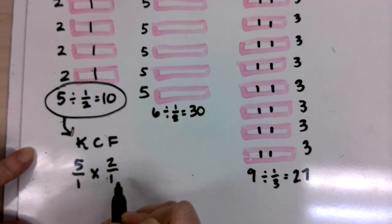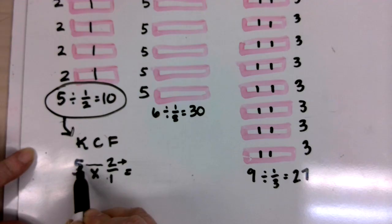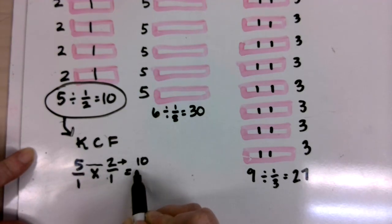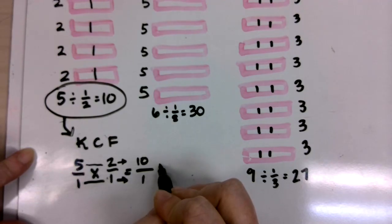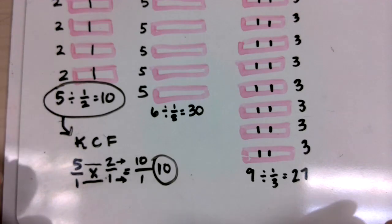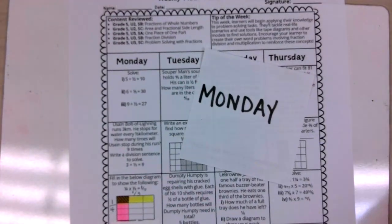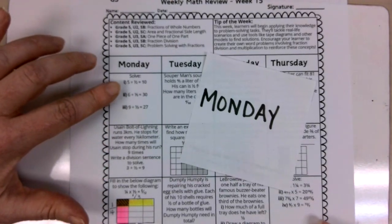Instead of a one over two, it becomes a two over a one. Now, boys and girls, we have a multiplication problem. And we know when we multiply fractions that we can multiply our numerators. Five times two equals ten. Multiply our denominators. One times one equals one. So yes, again, that shows me that when I break five into portions of one half, we can use this strategy with those three problems as well. Boys and girls, that is the concept behind number one.